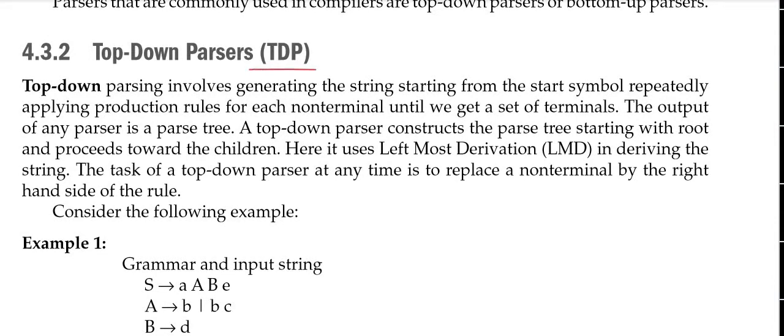Top-Down Parsing (TDP) involves generating the string starting from the start symbol, repeatedly applying production rules for each non-terminal until we get a set of terminals. We start from the start symbol — which is itself a non-terminal — and keep applying production rules until all terminals are obtained. This is essentially the same as leftmost derivation, which Top-Down Parsing uses.